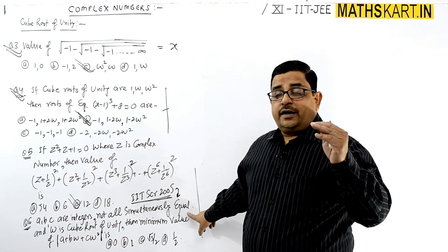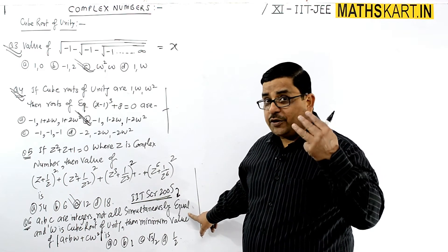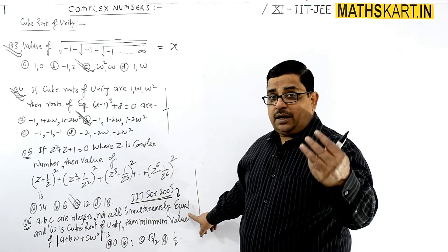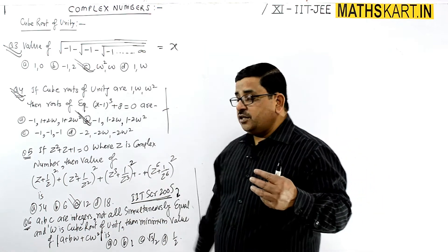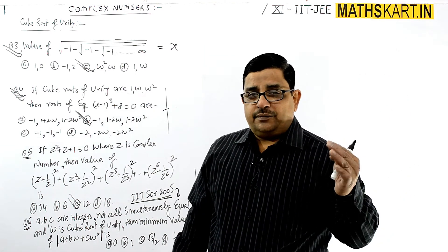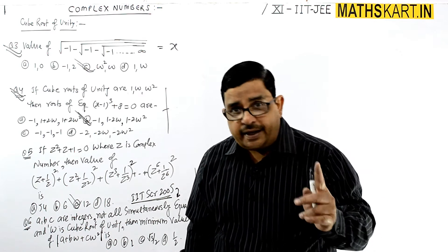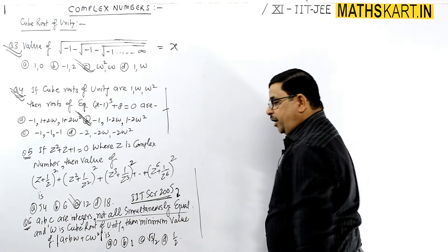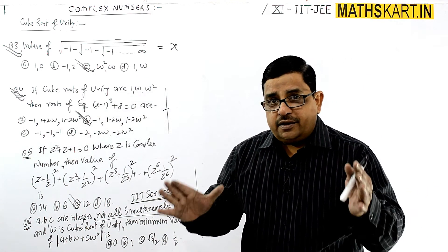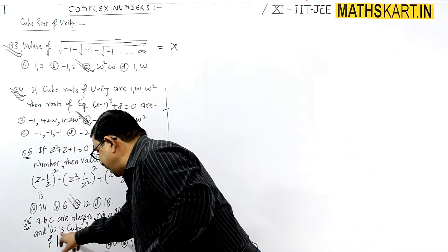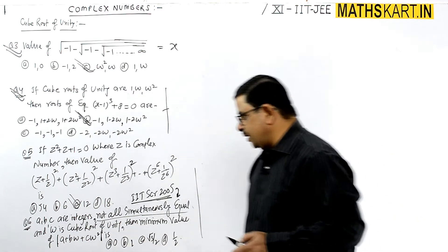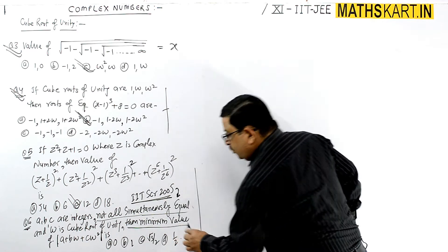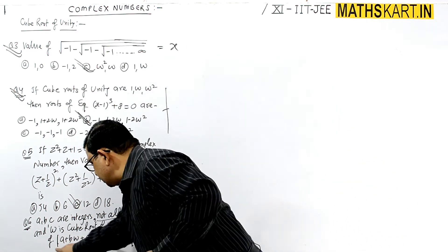Not all simultaneously equal means: at a time, two can be equal, but you cannot take simultaneously all three equal - A equals B equals C. You can give two the same value, but not all three. Then omega is the cube root of unity, and we need to find the minimum value.